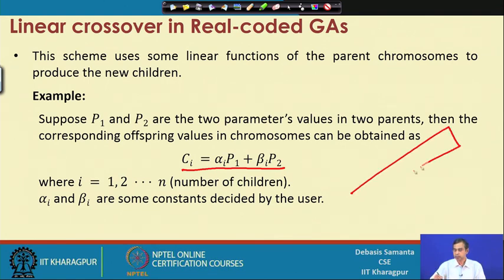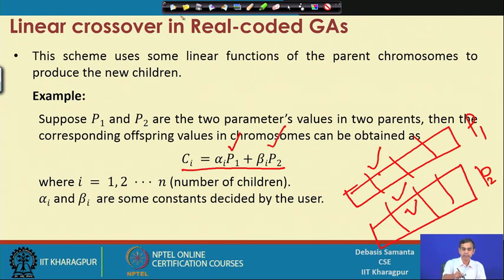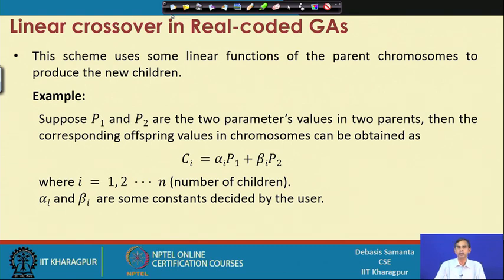If this is the chromosome belonging to one parent P1 and this is the chromosome belonging to another parent P2, then for any gene value — this one and this one — we denote them as P1 and P2. So we want to calculate the gene values for the i-th children, meaning one or more children can be produced from two parents P1 and P2.